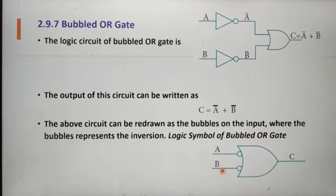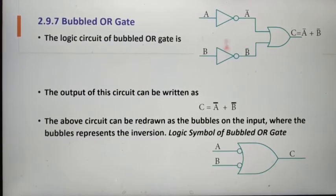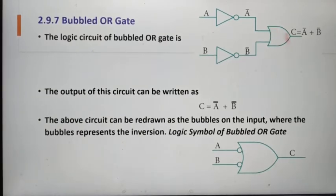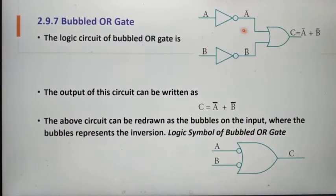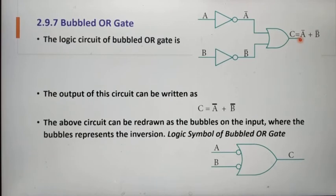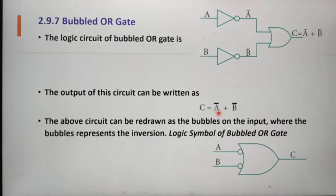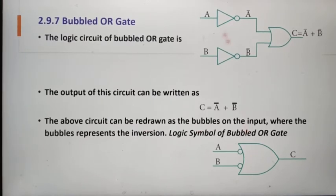Next we can see the Bubbled OR Gate. This is the logic circuit for Bubbled OR Gate. Here we have a single OR gate with two inverters. The two inverters' outputs are given as inputs for this OR gate. The first input is A, A is inverted into A bar. The second input is B, B is also inverted into B bar. A bar and B bar are both given as inputs for this OR gate. So our output C is equal to NOT of A OR NOT of B. The above circuit can be redrawn with bubbles on the inputs instead of two inverters, and it is called the Bubbled OR Gate.